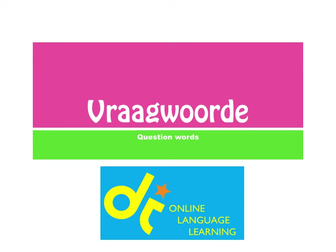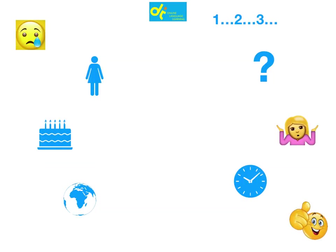Vraagwoorde — question words. When you work with Vraagwoorde, the idea is to remember that the Vraagwoord comes first in the sentence, and then your verb. So if you would ask 'who are you,' you'll hear in English that 'who' is first and the verb is second. So let's explore the different Vraagwoorde that you get.